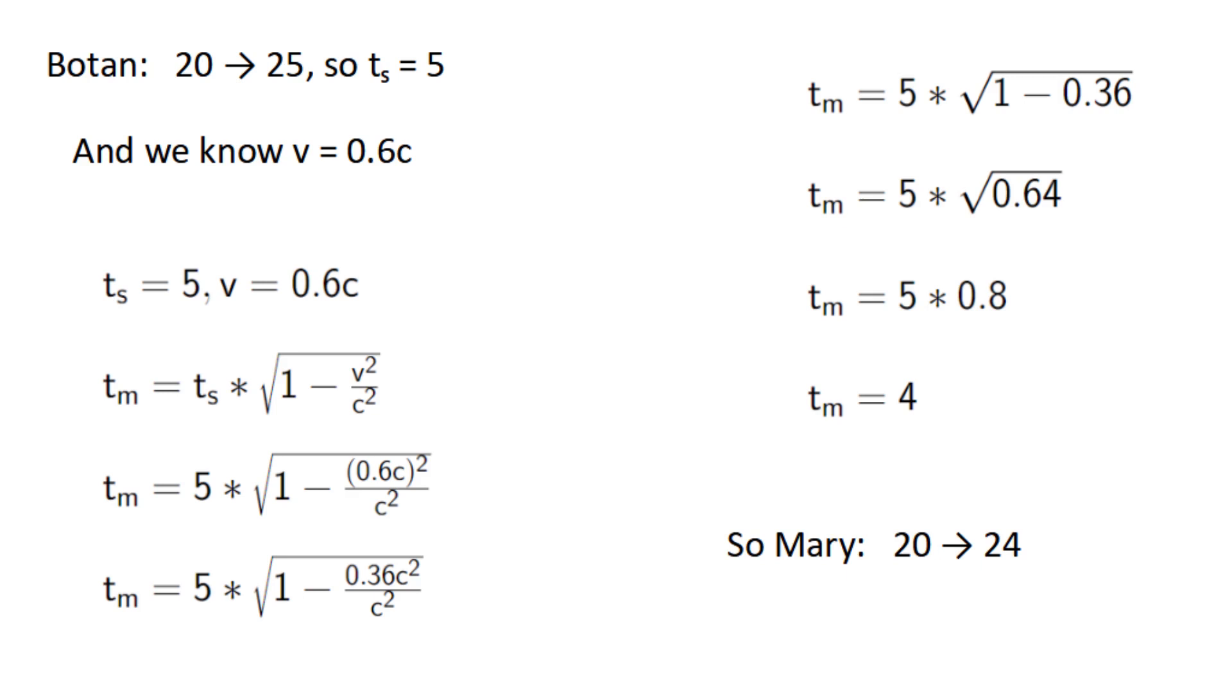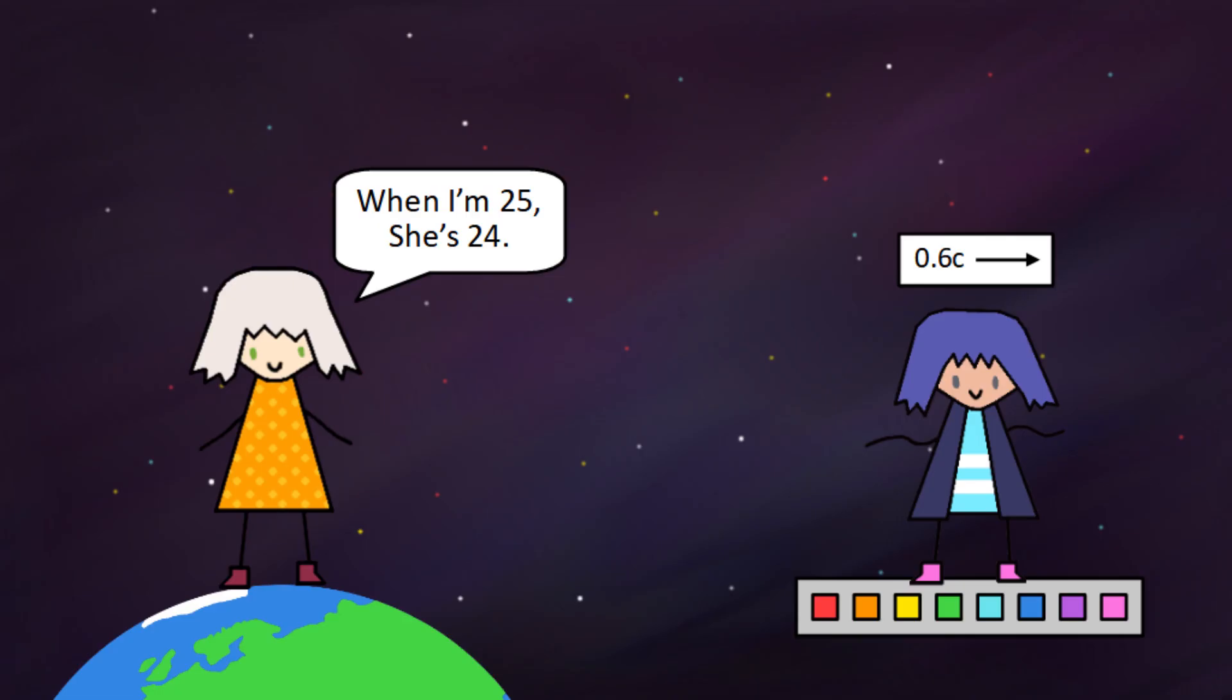This means that by the time Botan is 25, Mary will only be 24, due to the effects of time dilation.